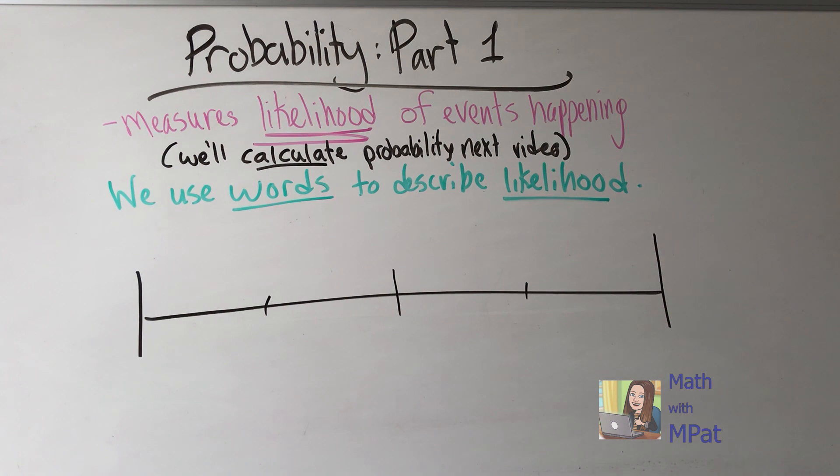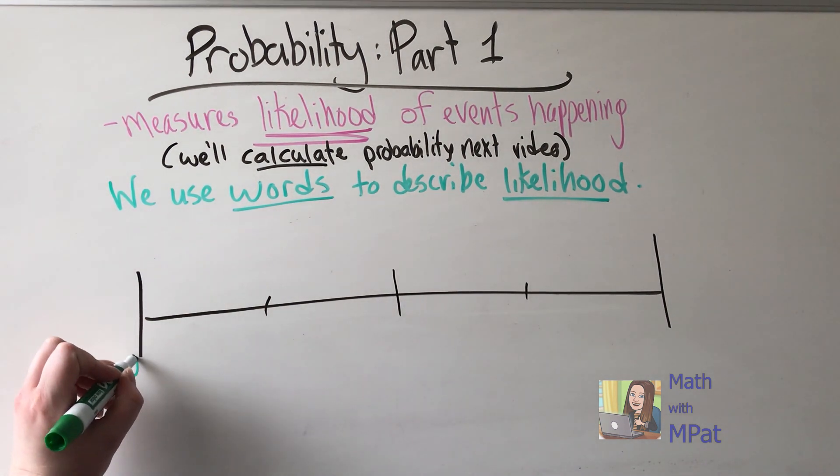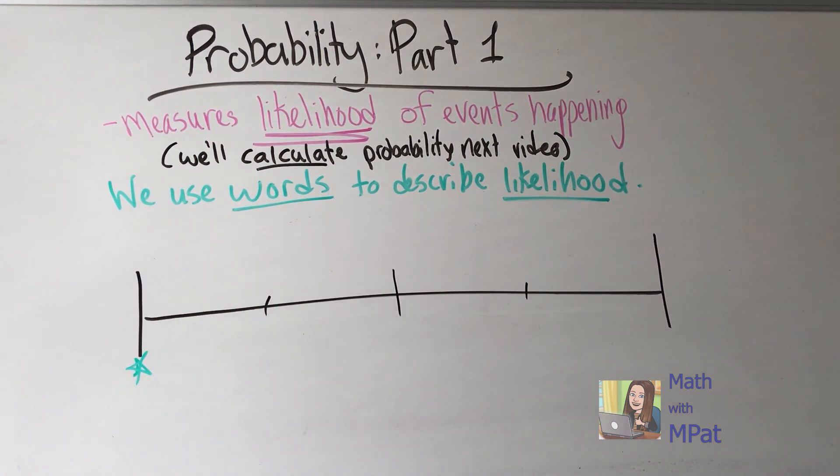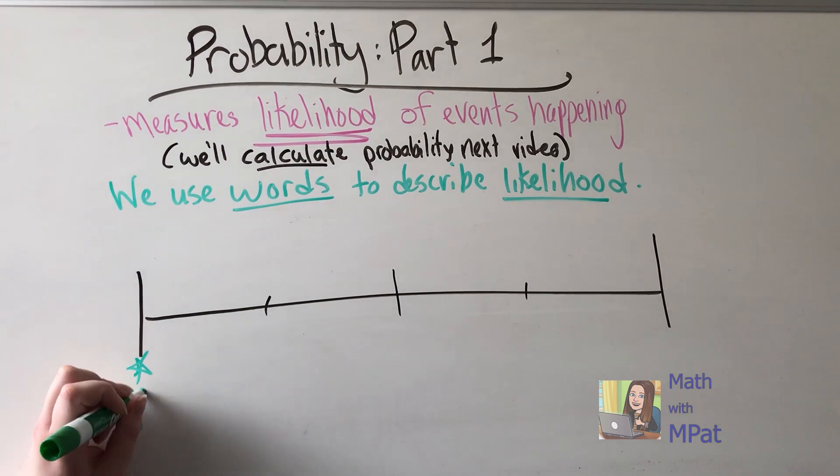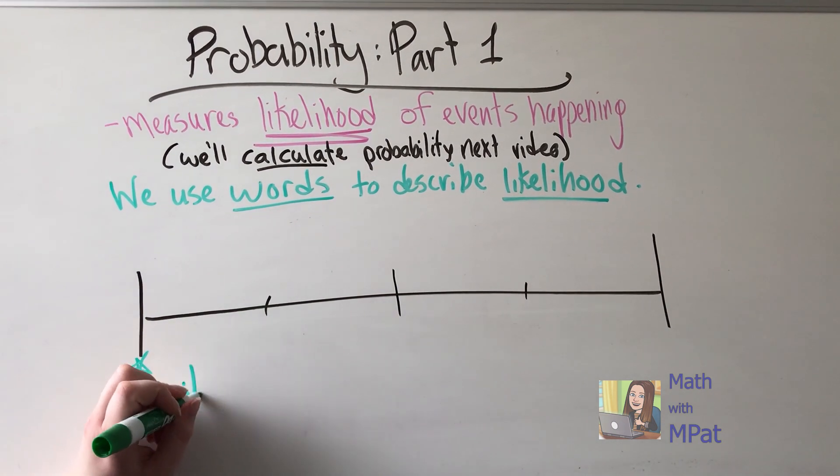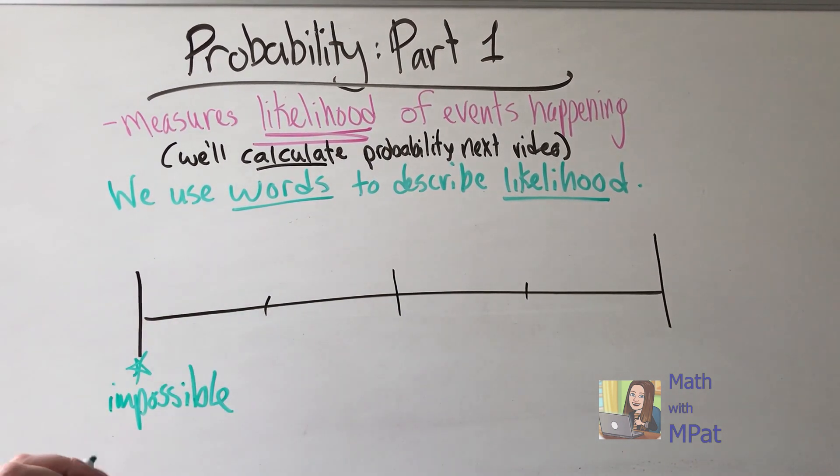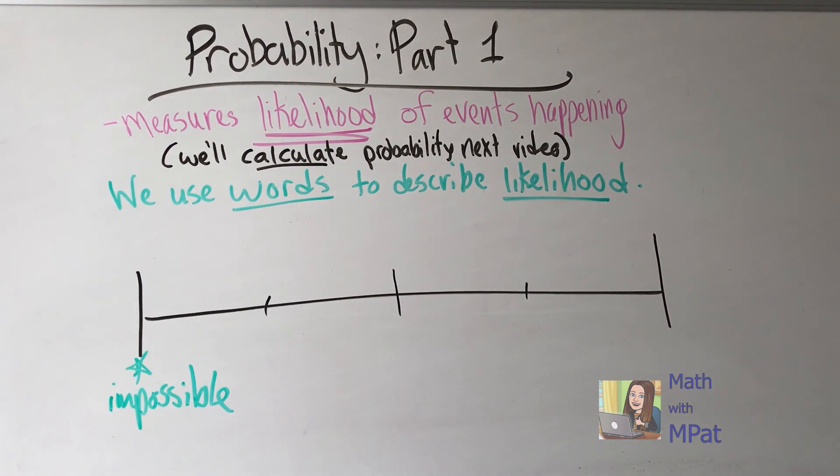Once again we're going to use a number line. Over here where we would put zero or a lower number on the number line, we're going to describe things as impossible. So on this part of the line, these events or things that could happen are definitely not going to happen.